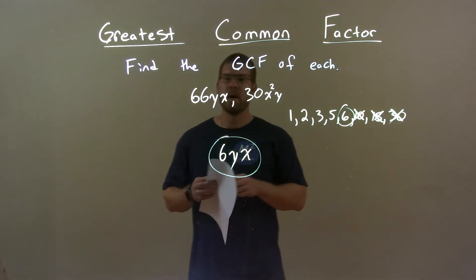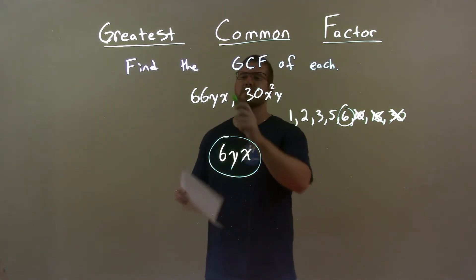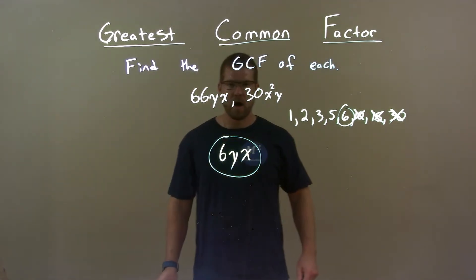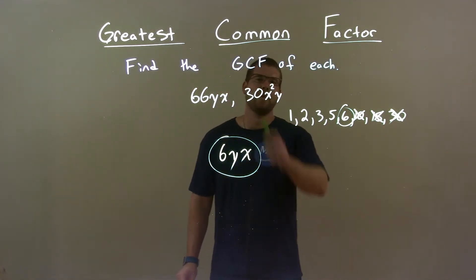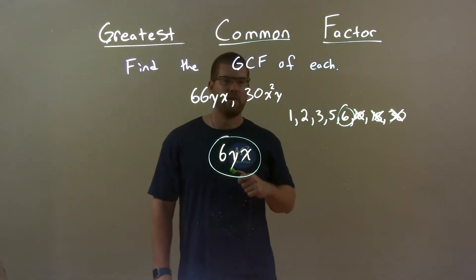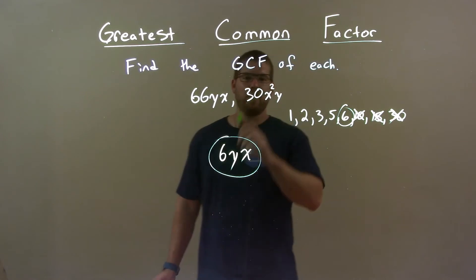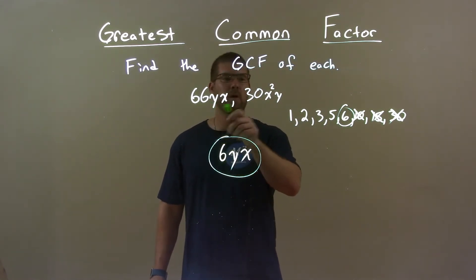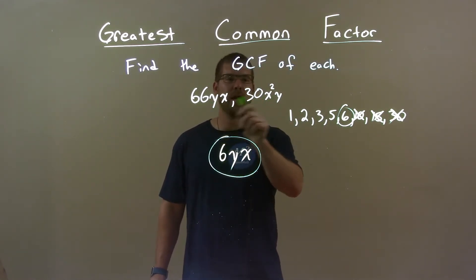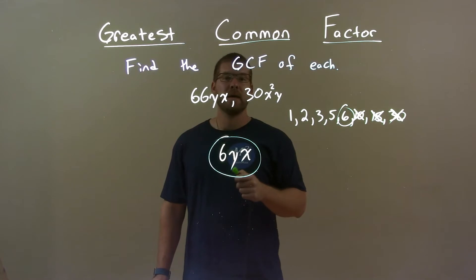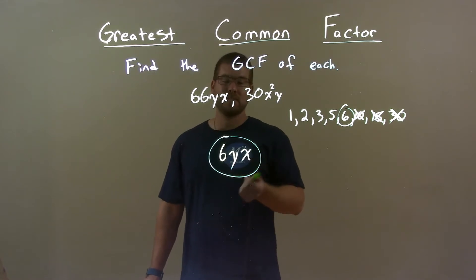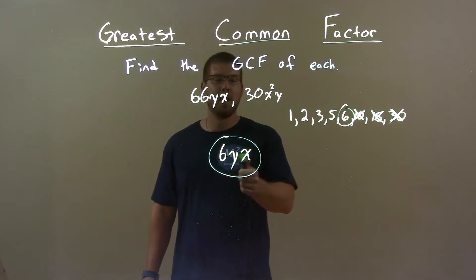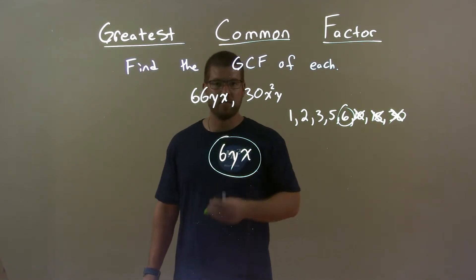So quick recap: we're given 66yx and 30x²y, and we have to find the GCF of that. Out of the numbers, we found the GCF to be 6. And there's a 1y in each and 1x in each. So our final answer is 6yx.